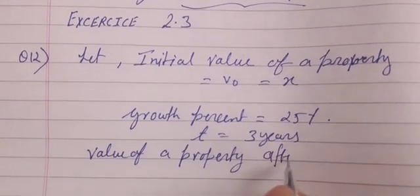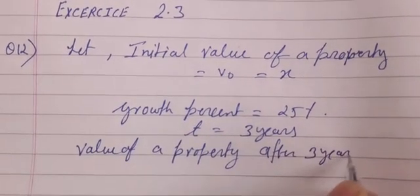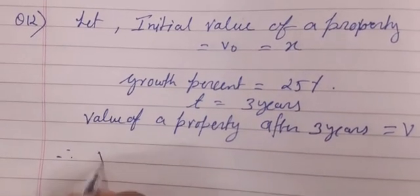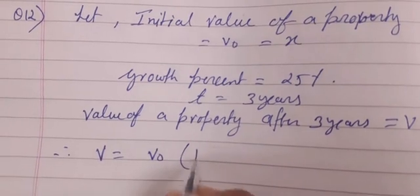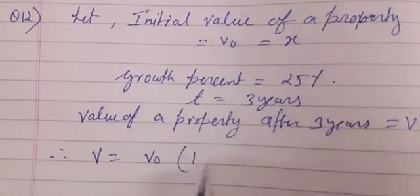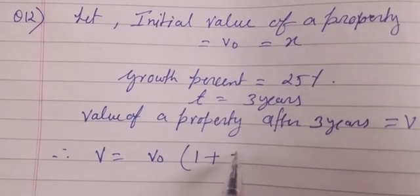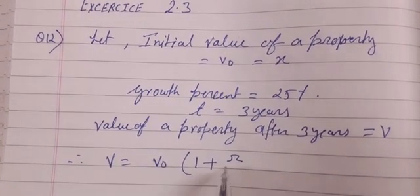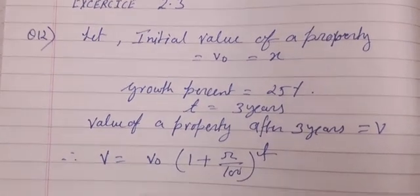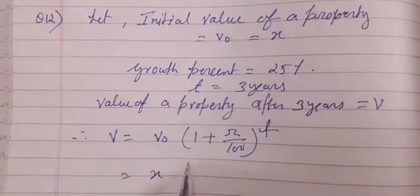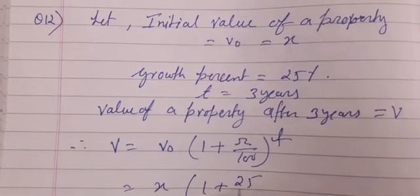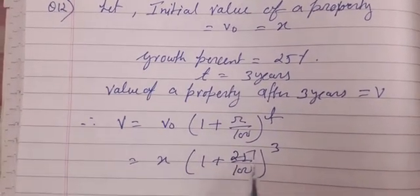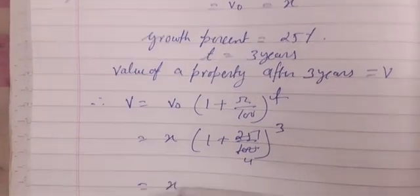Therefore our formula v is equals to v₀ within bracket - because here is the case of growth so we will write plus, not minus. Minus is for depreciation or for decreasing. So v₀(1 + r/100) to the power t. We will put the values: here is x(1 + 25/100) to the power 3, so it is x(1 + 1/4) cube.